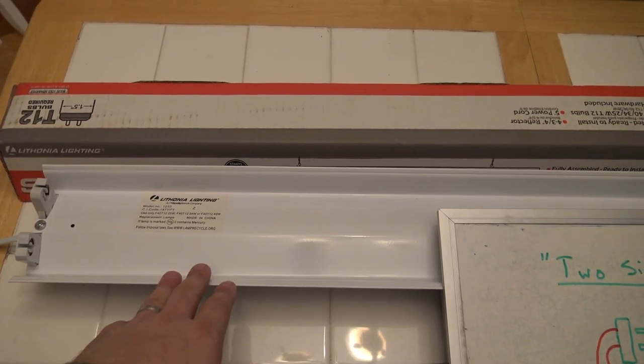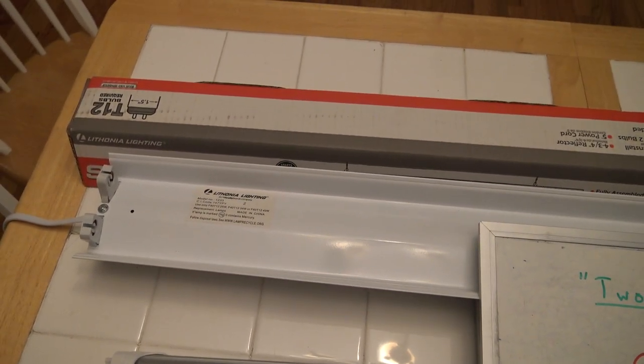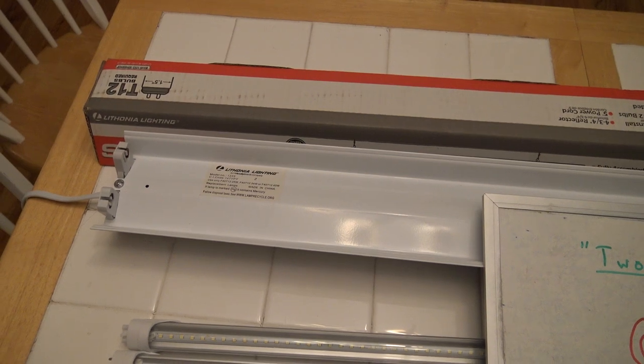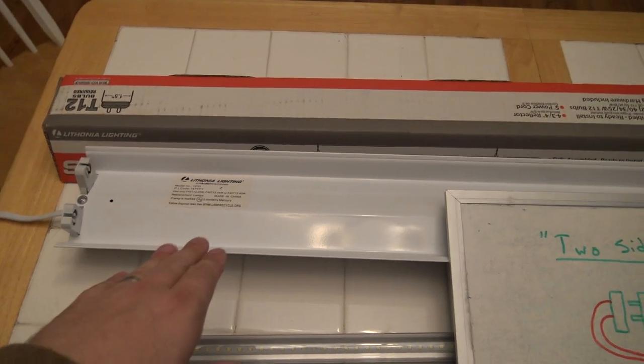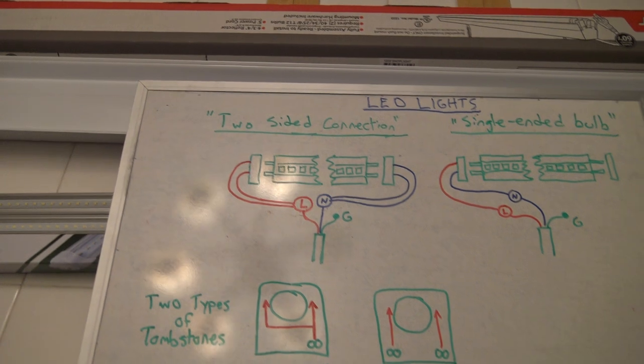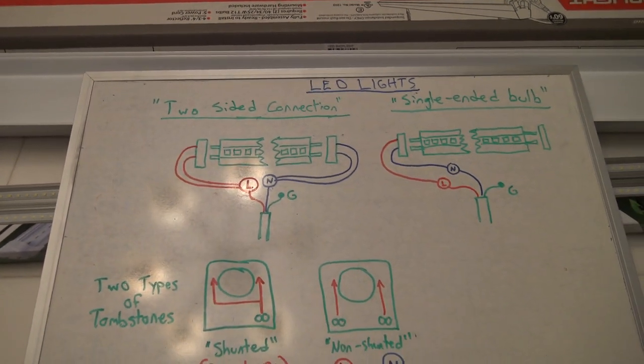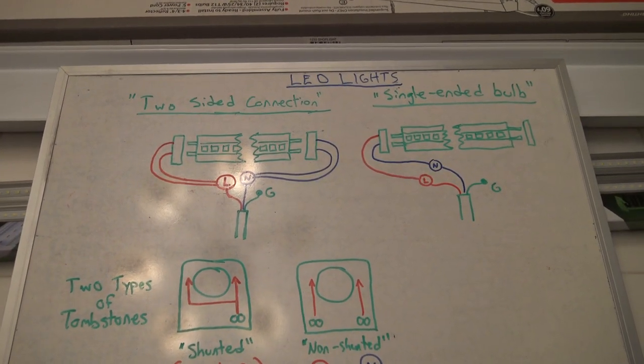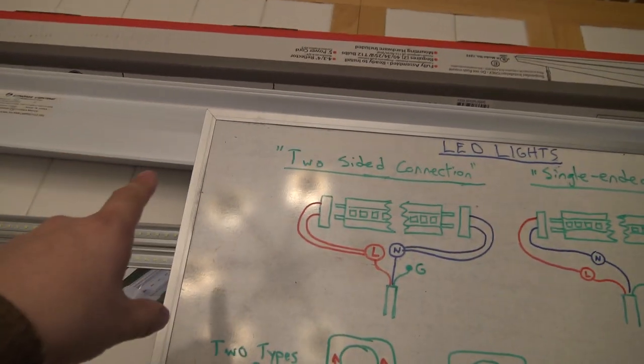Some of them you can, some of them will allow you to use it with the ballast that a regular T12 or T8 bulb takes, but it uses extra electricity, and it's completely unnecessary. So the first thing we're going to do is cut that ballast out.